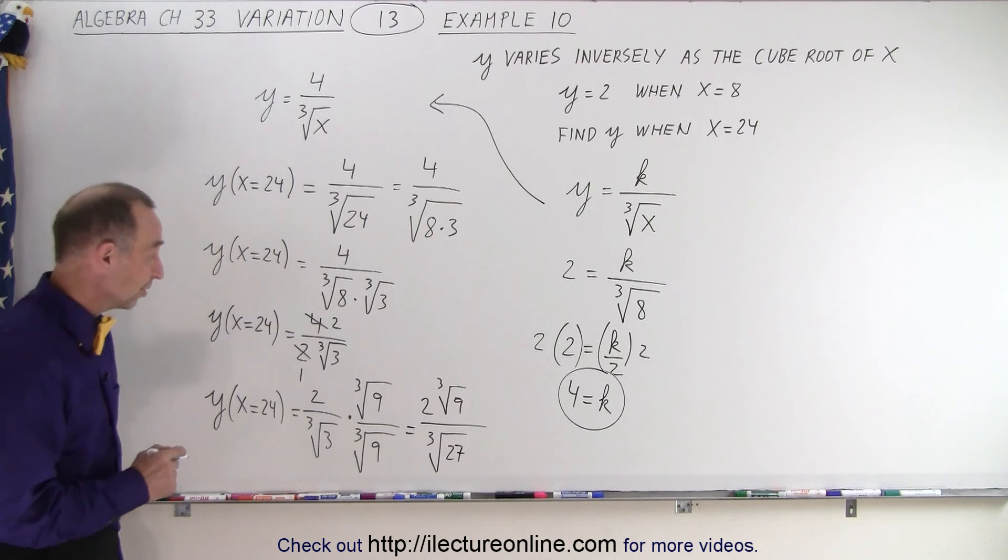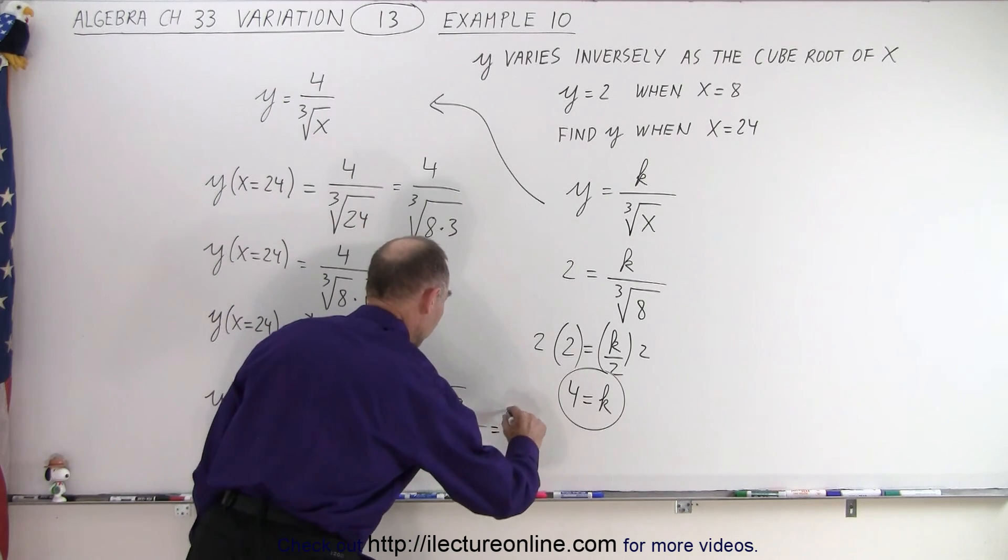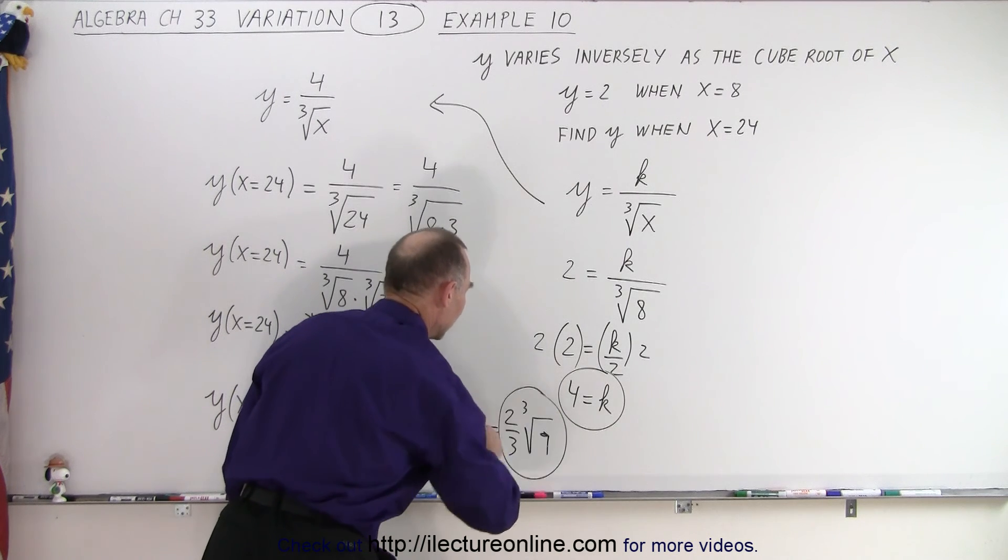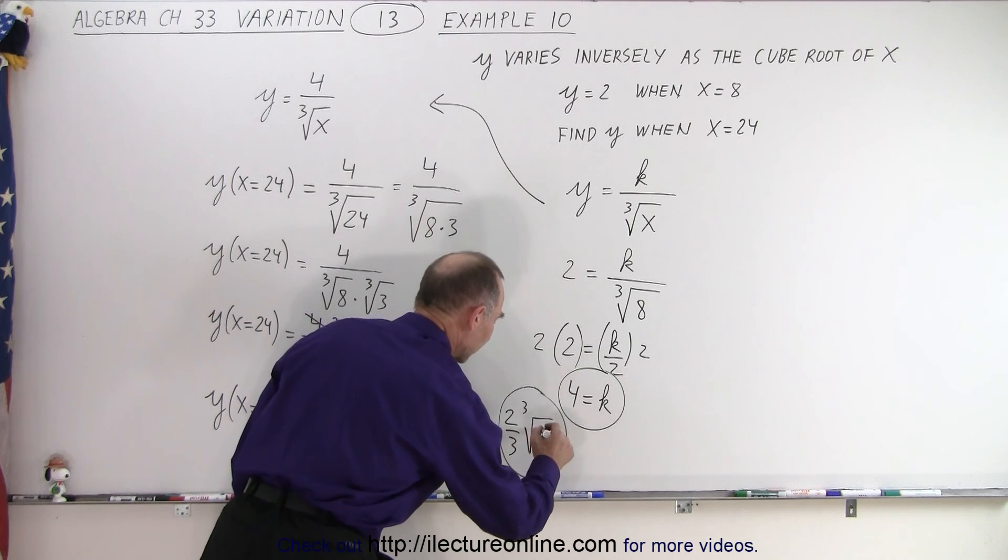And that, of course, the cube root of 27 is 3. So this becomes 2 thirds times the cube root of 9. And that is the value...